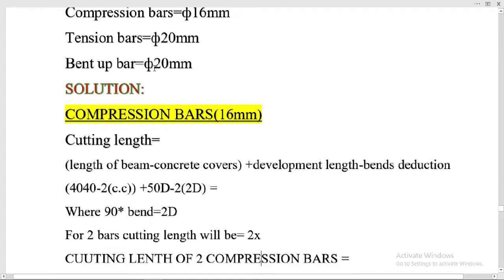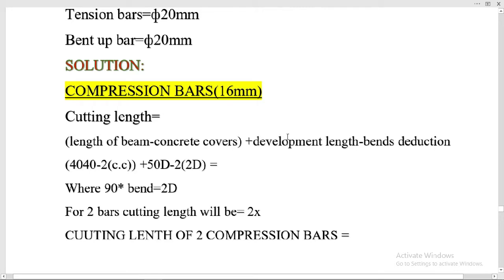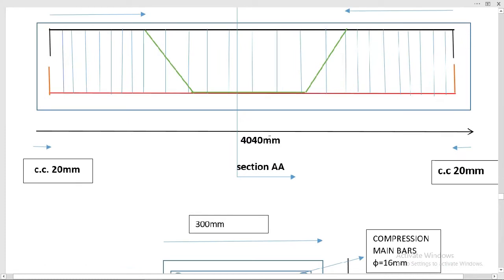Let's start the bar bending schedule. First we will calculate the cutting length of compression bars. We have two compression bars at the top of the beam with 16 millimeter diameter. The cutting length formula is: length of beam minus concrete covers from both sides, plus development length, minus deductions for bends. The length of the beam is 4040 millimeters.